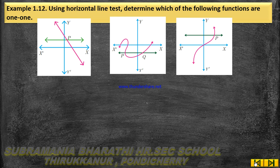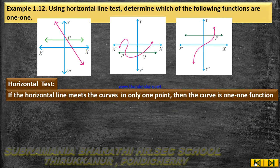So by using the horizontal line test: if the horizontal line meets the curve in only one point, the curve is called a one-to-one function. So if it cuts more than one point, it is not a one-to-one function.